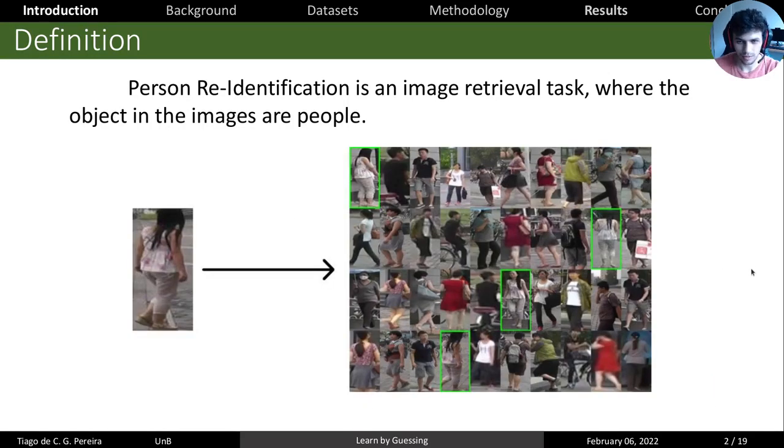First let's define what is person re-identification. It's basically an image retrieval task where the object in the images are people. Our objective is, given a query image and a gallery of images from other people that pass through our cameras, to know which images from our gallery show the same person as in our query image. Basically we want to retrieve every image from the gallery that has the same subject as the subject in our query.